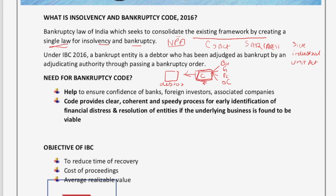When creditors feel that there is a default, the creditor community can send an application to the adjudicating authority. In this case it is NCLT for companies and DRT for individuals. The creditors send an application to the NCLT, and if NCLT accepts it, the debtor can be adjudged as bankrupt.